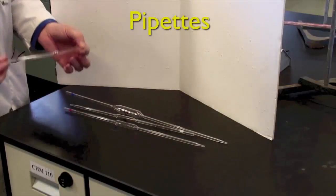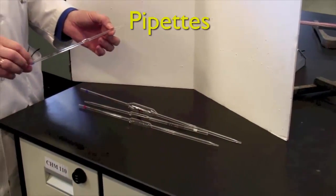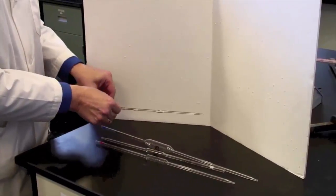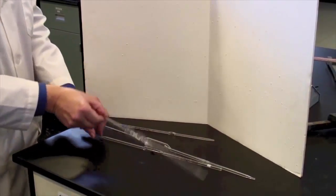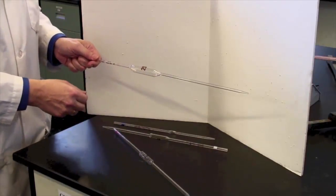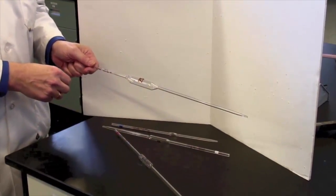For dispensing set volumes of liquid, we have volumetric pipettes. Now, they'll all be labeled on them somewhere. That's a 1 mil pipette, a 10, this is a 5 mil pipette, and here is a 25. You will have 10s and 25s available to you all the time.